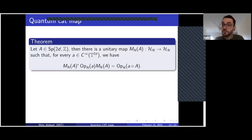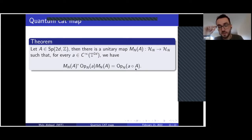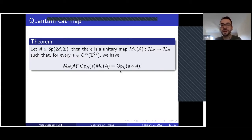The Egorov relation says that when you conjugate a pseudo-differential operator by your unitary map — which I will call a quantum cat map — it amounts to composing the observable by your classical cat map. This Egorov relation is exact, not just 'plus some remainder term which is small' — this is an algebraic equality with no error. This unitary map is not unique: you can multiply it by a complex number of modulus one, but that is the only freedom. You can fix this by replacing the symplectic group by its two-fold cover, the metaplectic group.